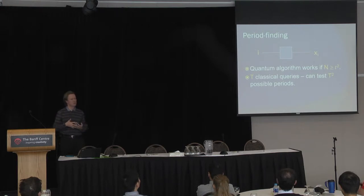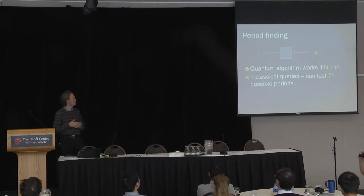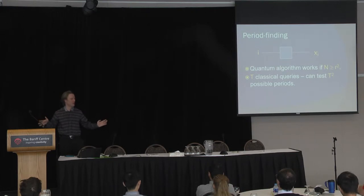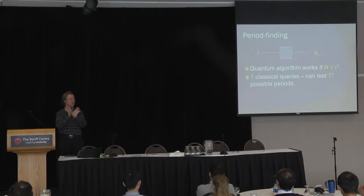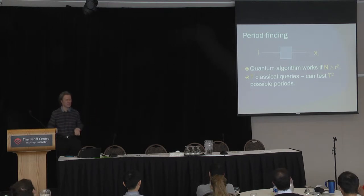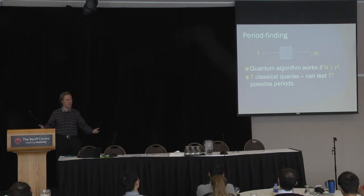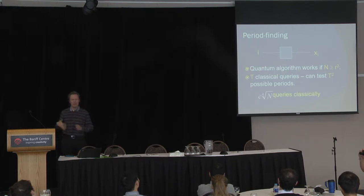If we think about classical complexity, it's not n — it's less. First, Shor's algorithm for period finding only works if you are given a sequence whose length is at least the square of the period. Second, if you query T elements of the sequence, you can test T squared possible periods, because you can form T squared pairs and each pair can in principle test one possible period. Putting those together: the period can be at most square root of n, and if you have at most square root of n periods, you can test them with fourth root of n queries. So I think this is actually optimal.